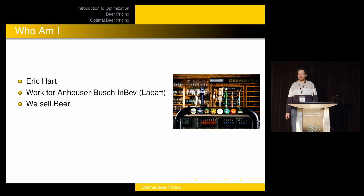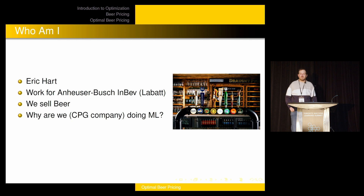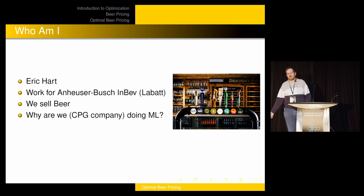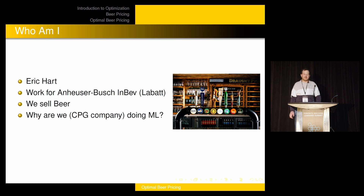We sell beer. Why are we — a CPG company selling beer — doing machine learning? There are a bunch of reasons. We're at an ML conference, so you can probably guess. There are lots of natural problems we have, like optimal pricing, optimal routing, and also things like demand estimation and volume forecasting, which are really important to us.